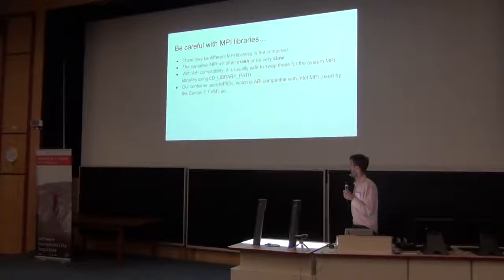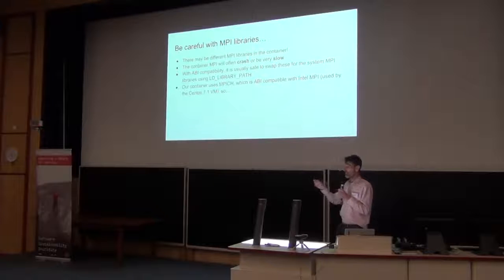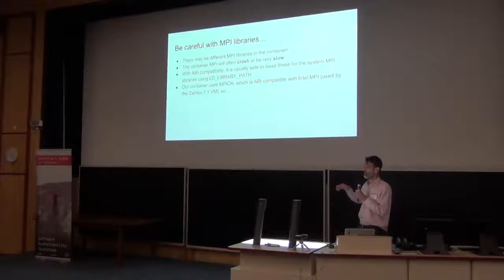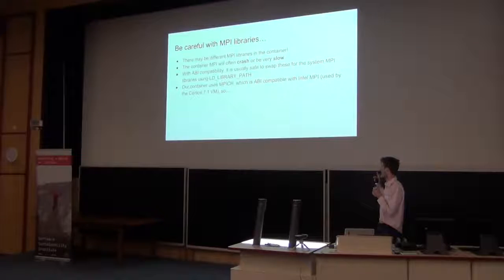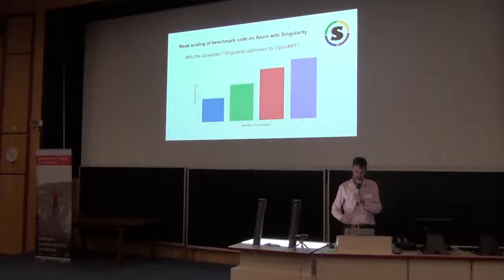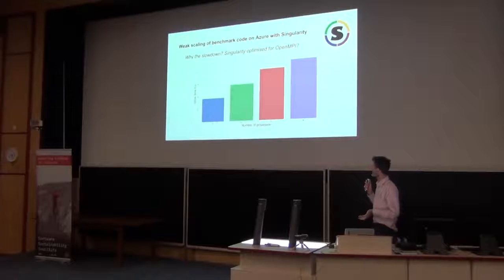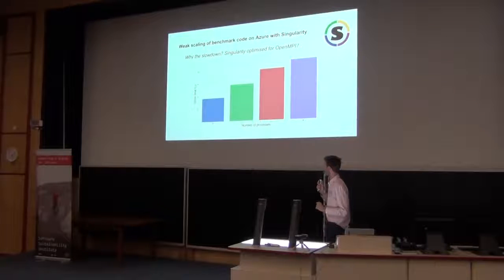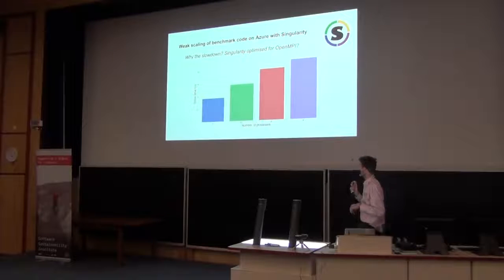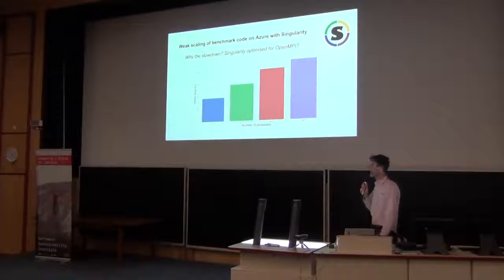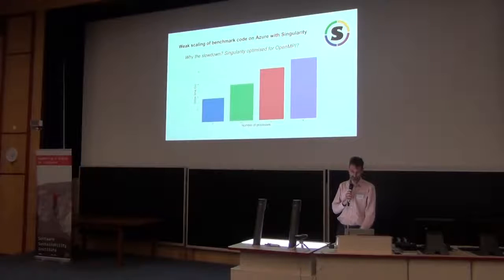There is a thing in MPI called ABI compatibility, which means it should be safe to swap libraries just by using the library path, because it's the same binary interface. That's certainly true for MPICH and Intel MPI, which is also on Microsoft. If you do that, it works — but annoyingly it doesn't scale particularly well. Looking at the weak scaling problem, where the problem size scales with the number of processes, you see it getting slower and slower. There's still something strange going on there, which I may need to investigate further.